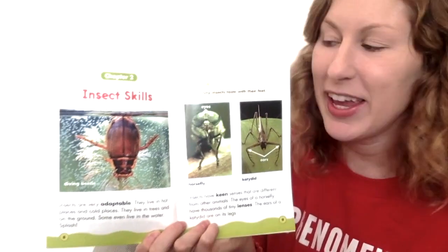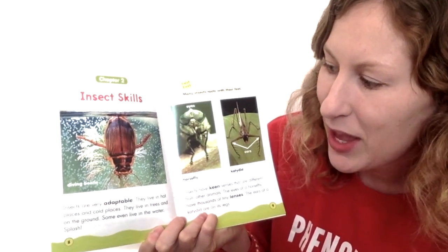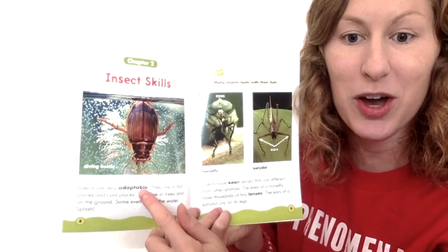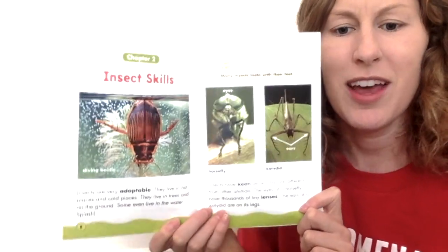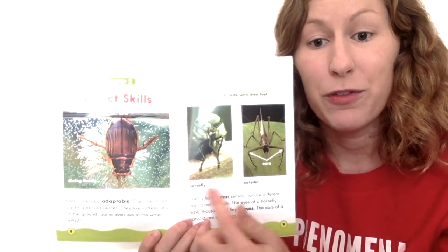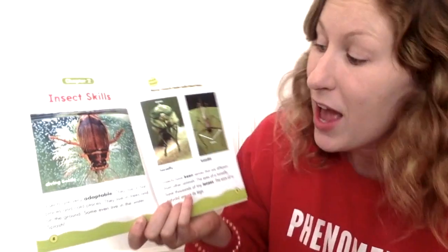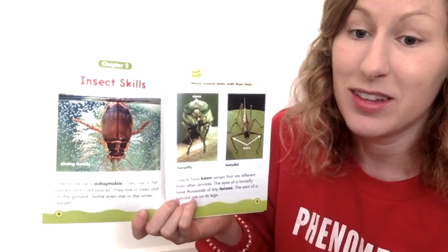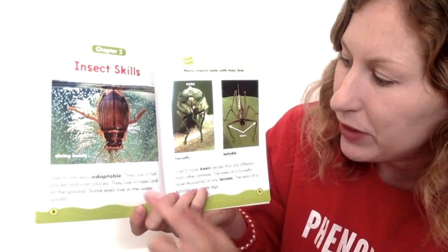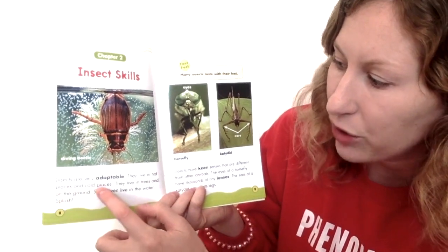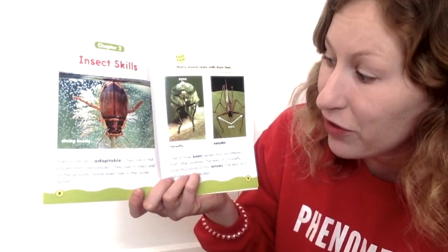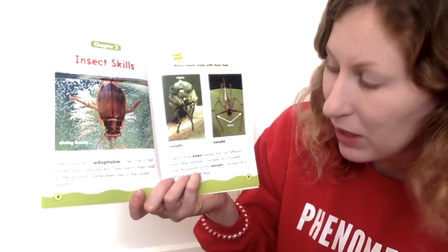Chapter two, insect skills. Insects are very adaptable — there's another bolded word. This time instead of going to the glossary, I'm going to keep reading and see if the text tells me what adaptable means. Insects are very adaptable. They live in hot places and cold places. They live in trees and on the ground. Some even live in the water.